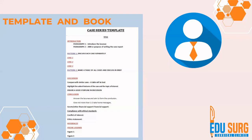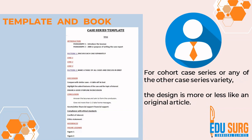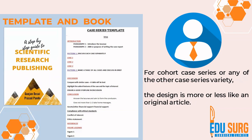This is a template available in our book on scientific research publishing. The introduction has two paragraphs — paragraph one introduces the topic, and paragraph two states the aim of writing the report or series. You then discuss each case separately or make a table, followed by discussion and conclusion. This is for an informal case series. If it's a cohort case series or any other variety, the design will be more like an original article. Our next topic is writing an original article, which will be in three to four parts. This book is free on Amazon Kindle for Kindle Unlimited readers.